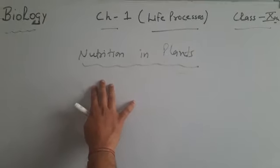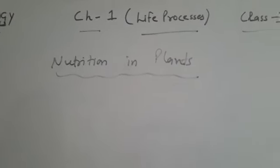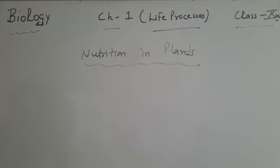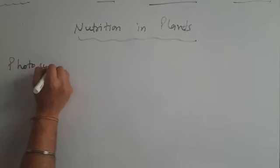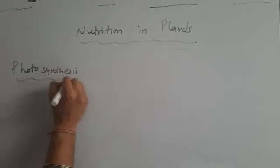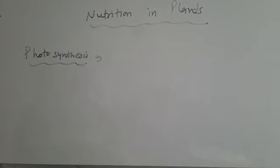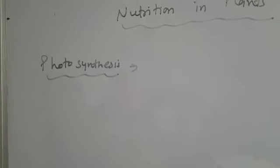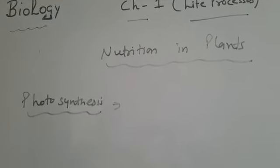Next we will discuss about nutrition in plants. The mode of nutrition in plants is autotrophic, and the process they perform is photosynthesis. Photosynthesis — 'photo' is related to light and 'synthesis' is related to making food. Photosynthesis is the process by which green plants make their own food from carbon dioxide and water, using sun energy in the presence of chlorophyll.